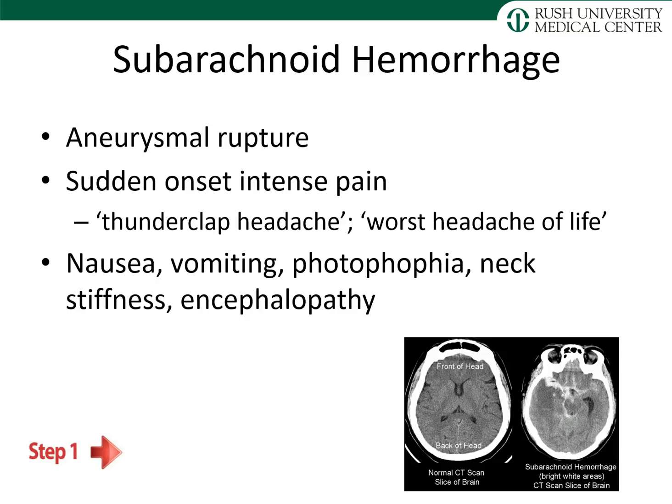Subarachnoid hemorrhage is frequently due to aneurysm rupture and presents with sudden onset of intense pain described as a thunderclap or the worst headache of the patient's life. It can be associated with photophobia, neck stiffness, and encephalopathy. Imaging shows bright blood located in the subarachnoid space.